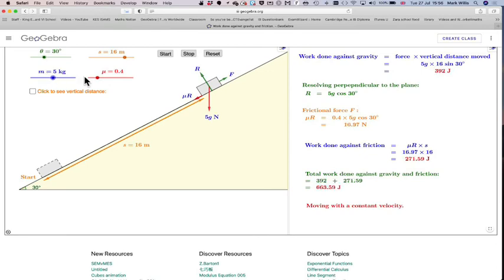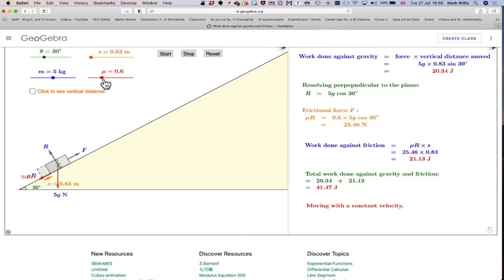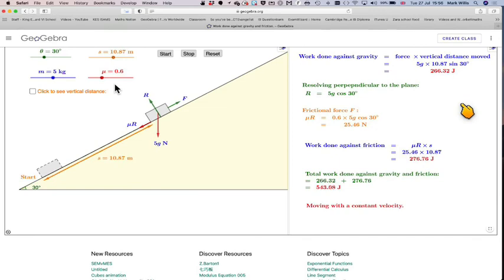I'm just going to show how this works so you can look at it for yourselves. You can change the value of mu. You can change the distance traveled. Now if you wanted to you could reset it and start it and you can actually see its motion and you can see the amount of work increasing as it moves up.